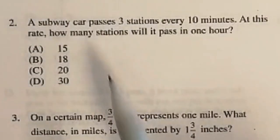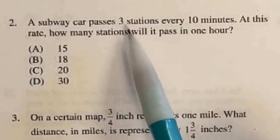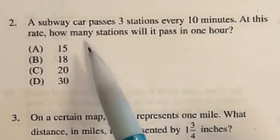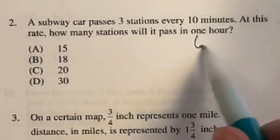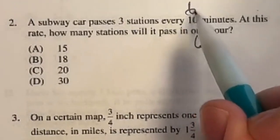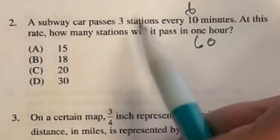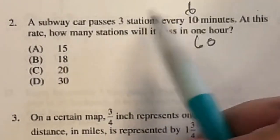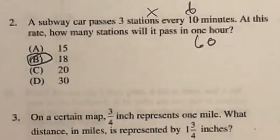So number two on the ASVAB says that a subway car passes three stations every 10 minutes. At this rate, how many stations will it pass in one hour? One hour is 60 minutes, so that would be six 10-minute intervals. And if you're doing six 10-minute intervals, meaning that there's three each time, you would just do six times three here to get a final answer of 18.